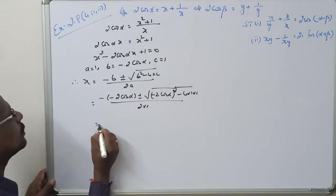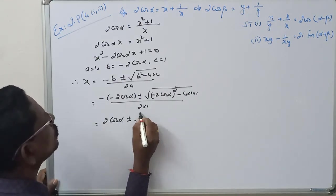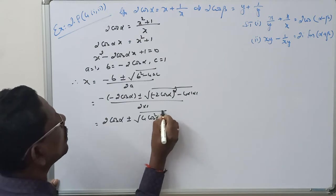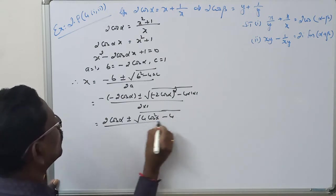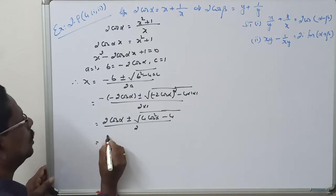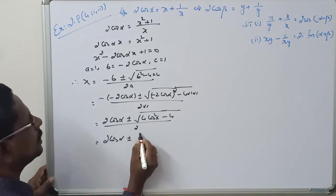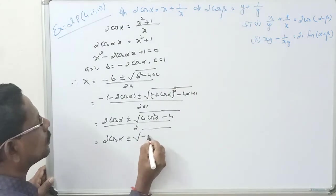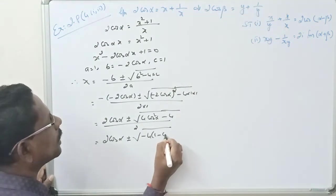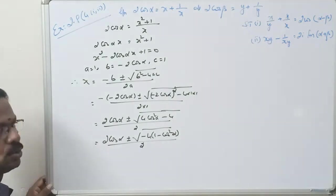Simplifying: 2cos α plus or minus square root of 4cos²α minus 4, divided by 2. Taking out minus 4: 2cos α plus or minus square root of minus 4 into (1 minus cos²α), divided by 2.